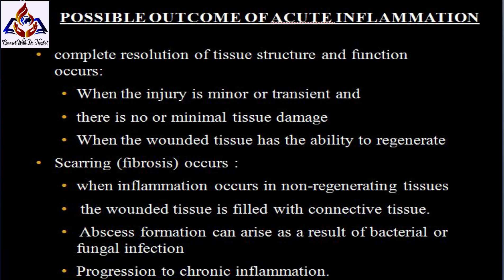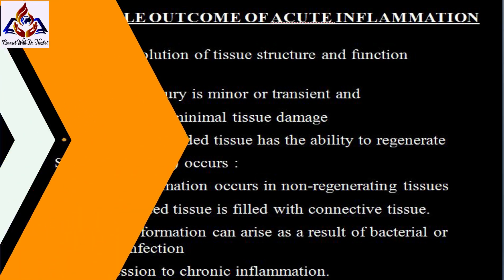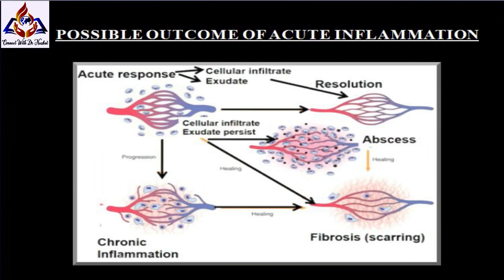When the wounded tissue has the ability to regenerate, complete resolution occurs. Scarring or fibrosis occurs when inflammation occurs in non-regenerating tissues, where the wounded tissue is filled with connective tissue. Abscess formation can arise as a result of bacterial or fungal infection. Progression to chronic inflammation is another possible outcome.